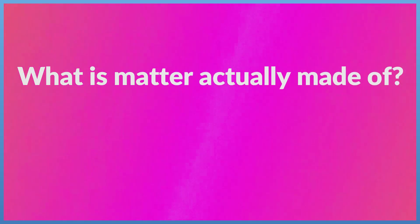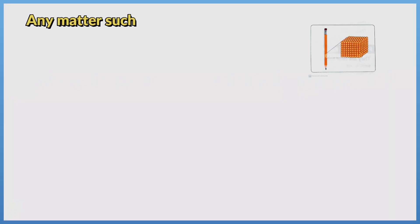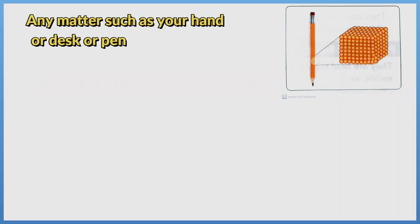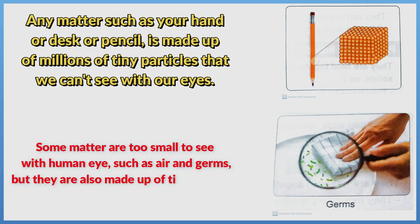What is matter actually made of? Any matter — such as your hand, a desk, or a pencil — is made up of millions of tiny particles that we can't see with our eyes. Some matter is too small to see with the human eye, such as air and germs, but they are also made up of tiny particles.